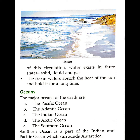Now, coming to the oceans — the major oceans of the earth are the Pacific Ocean, the Atlantic Ocean, the Indian Ocean, the Arctic Ocean, and the Southern Ocean. The Southern Ocean is a part of the Indian and Pacific Oceans which surrounds Antarctica.